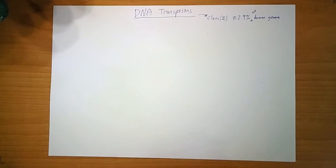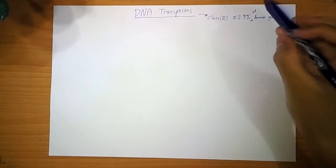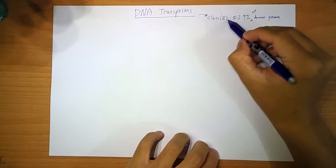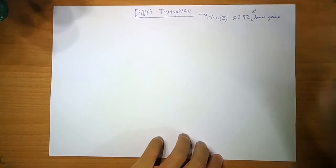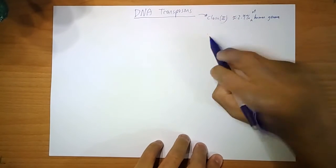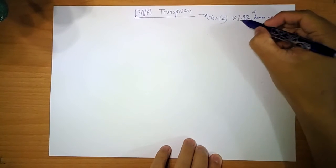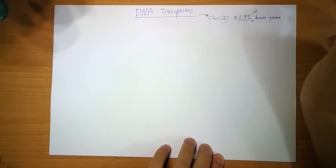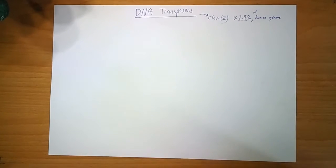Hi, so let's talk about DNA transposons. DNA transposons are class 2 transposons. Not sure how they classify it, but RNA transposons are class 1. These are class 2. And it makes up about 2.9% of our human genome. So, does not seem like a lot,